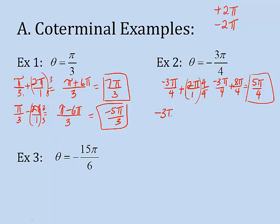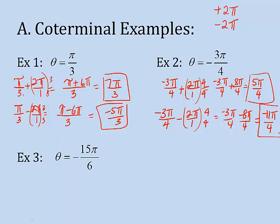Then I'm going to subtract 2 pi. Again, I have to have a common denominator. So negative 3 pi over 4 minus 8 pi over 4 equals negative 11 pi over 4. So I have my two coterminal angles.